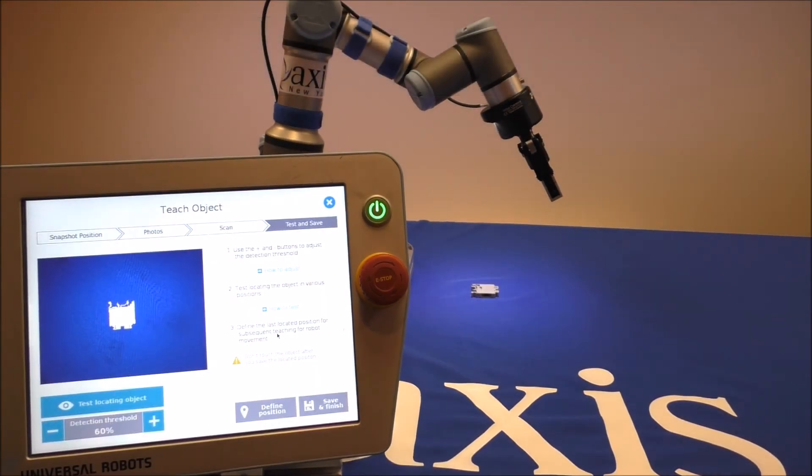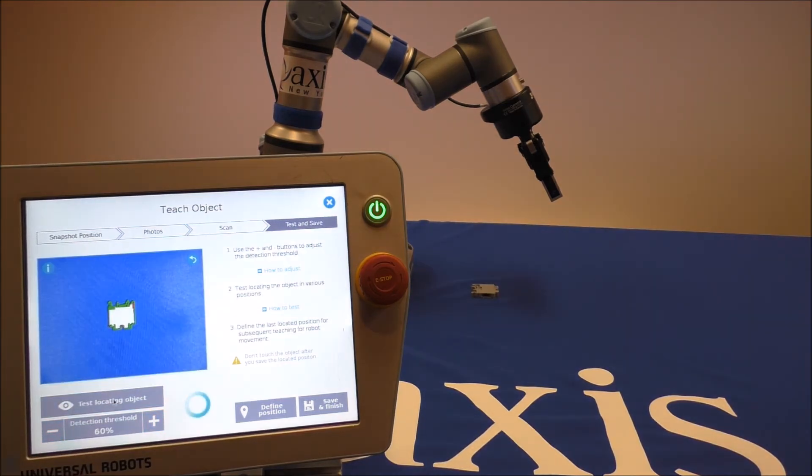Now that our object model has been created, we can test locating the object. This will help us determine our detection threshold. We will get back a score from zero to 100 percent. Here we have 94.8 percent detection score, so we can increase our threshold. I'm going to do 85 percent.